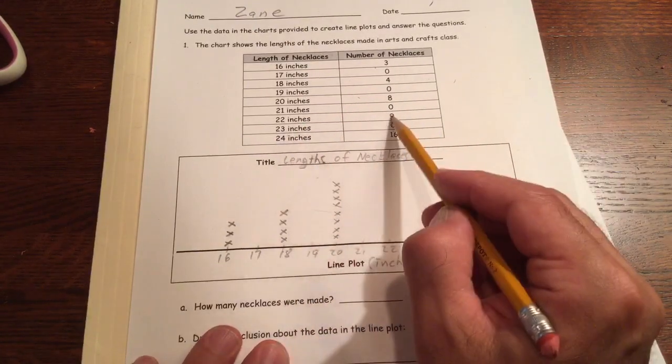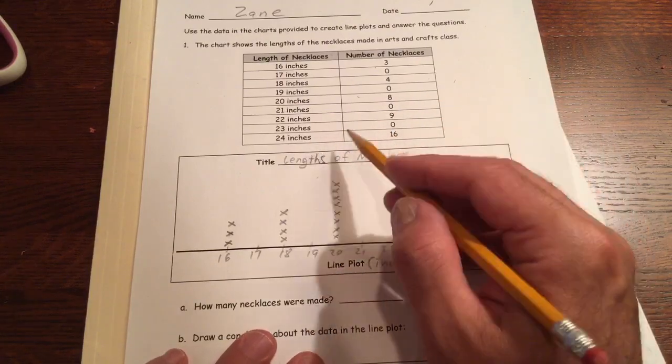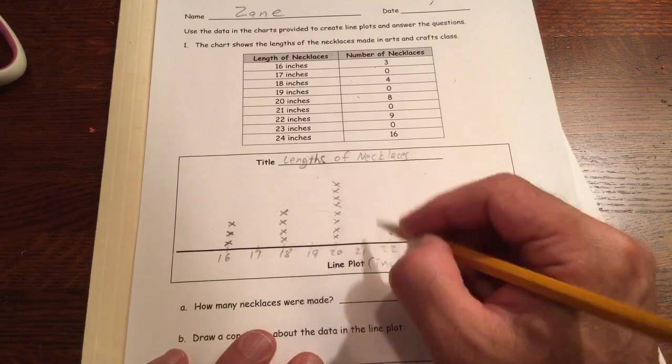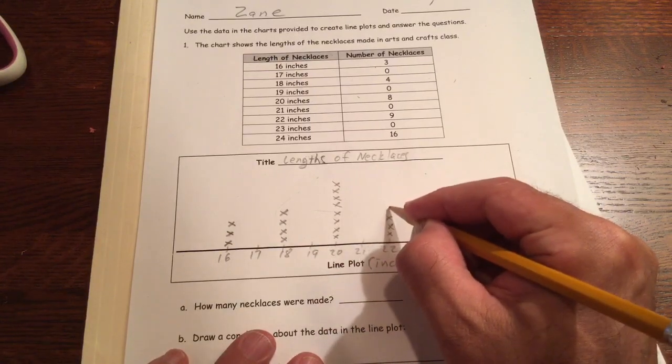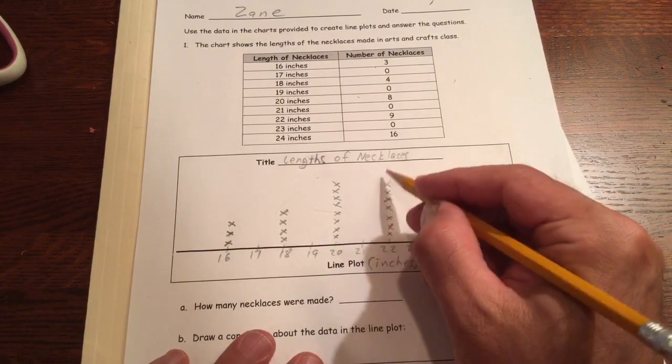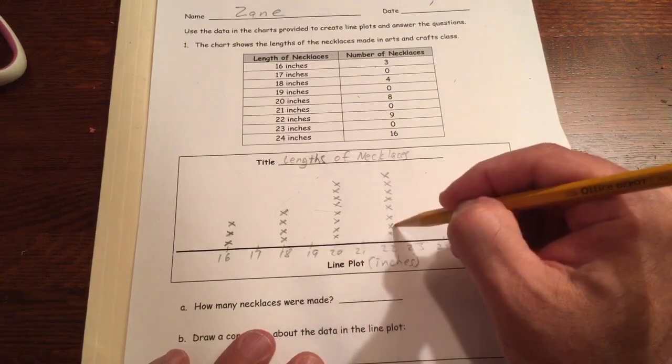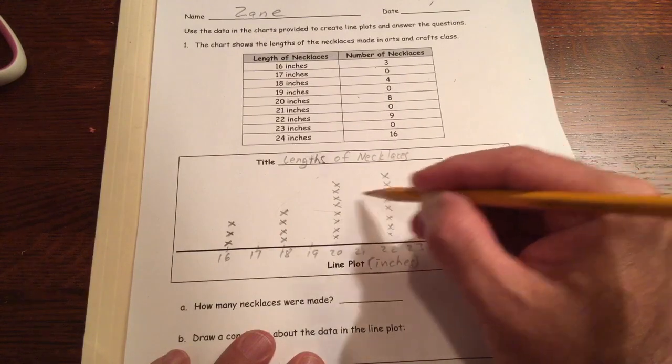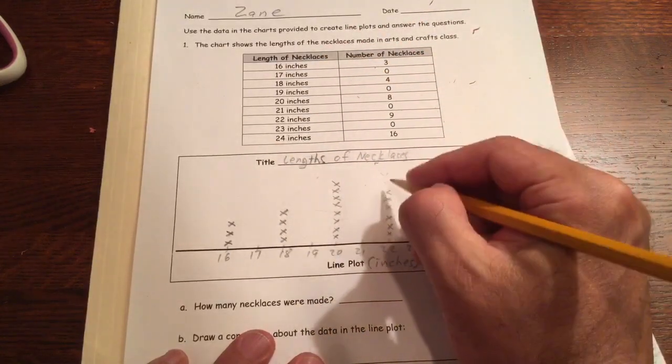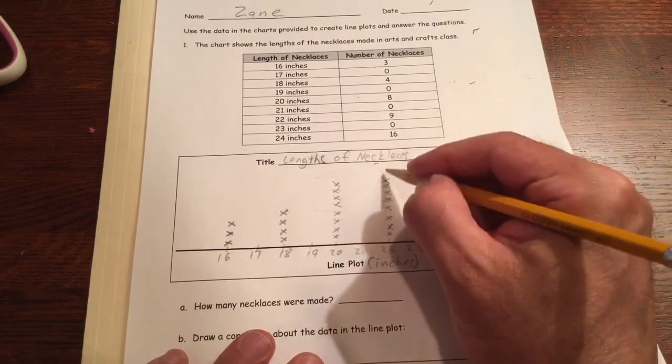21, there aren't any. 22, and I notice that these are all even numbered lengths. So it makes me think about the necklaces, like how come there aren't any that are an odd length, but they're all even numbers. The next one is 22, and there's 9 of those. So it should end up being a little bit taller than the 8: 1, 2, 3, 4, 5, 6, 7, 8. Wait a minute. This is supposed to be 9, so I'm going to have to fix it. 1, 2, 3, 4, 5, 6, 7, 8, 9. There.